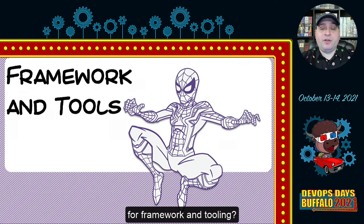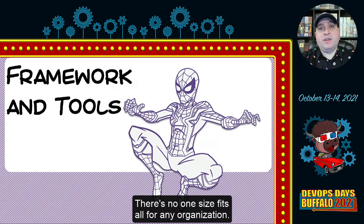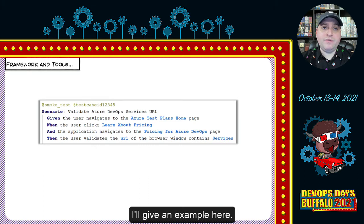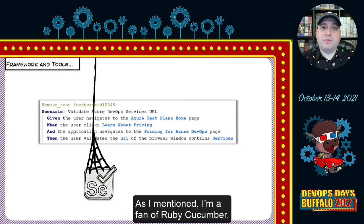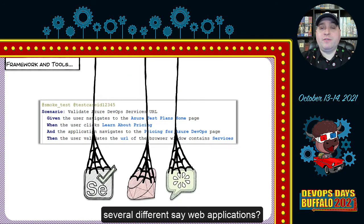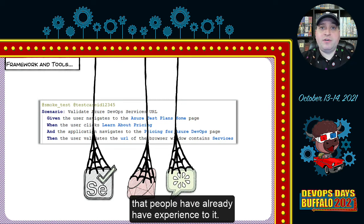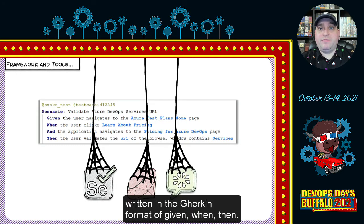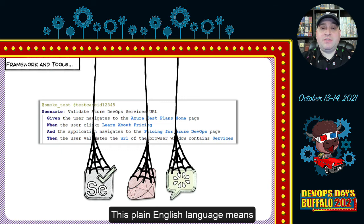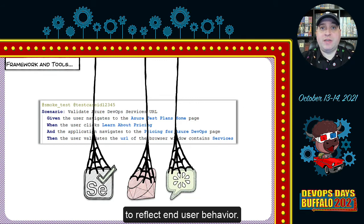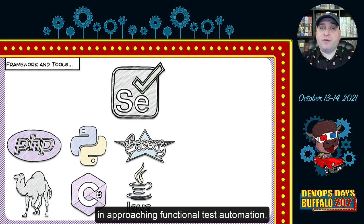When looking at framework and tooling, there's no one-size-fits-all for any organization — you're looking for the right fit for your team. As an example, I'm a fan of Ruby Cucumber for web applications. It uses Selenium, a popular open source tool for web automation, which reduces cost and increases the odds that people already have experience with it. The top layer is written in the Gherkin format of given, when, then — plain English that makes automation accessible to multiple roles and shareable with stakeholders to reflect end-user behavior. This is a solution, not the solution, for functional test automation.